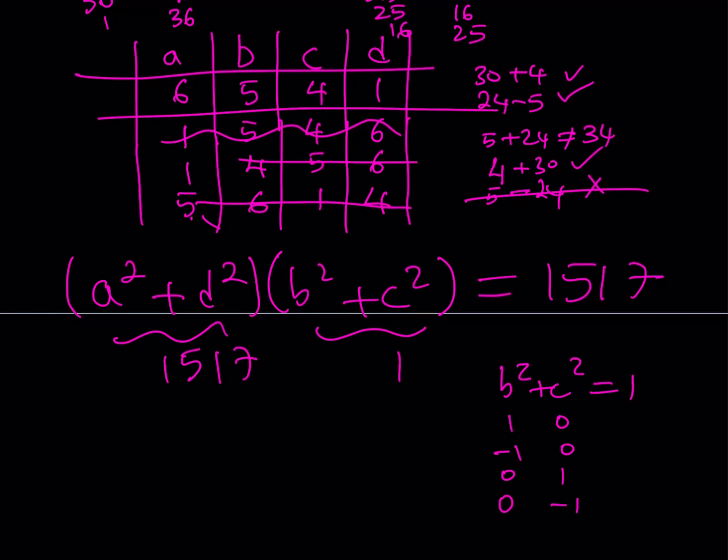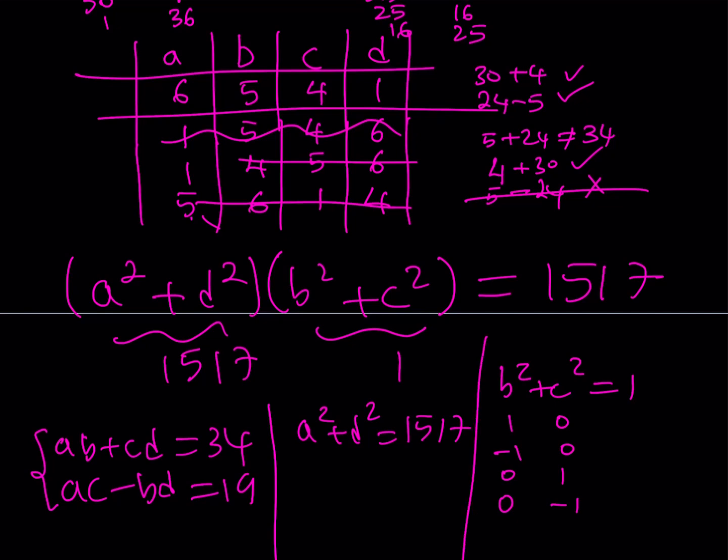Now when you plug those into the original equation, would that work? And what was the original problem? It was AB + CD = 34 and AC - BD = 19. Are we able to satisfy this? Let's take a look. Well, if I'm saying that B² + C² = 1, then I'm saying that A² + D² = 1517.